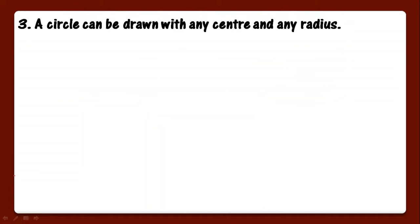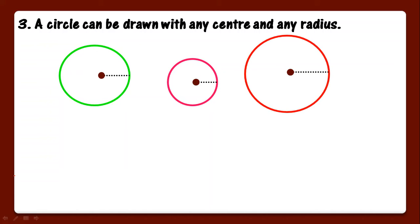Third is a circle can be drawn with any center and any radius. A circle can be drawn from any center and with any radius. Suppose we have these three centers. This is the radius. Suppose the radius is three here, another radius one centimeter, another radius four centimeter. In this way, a circle can be drawn with any center and any radius.